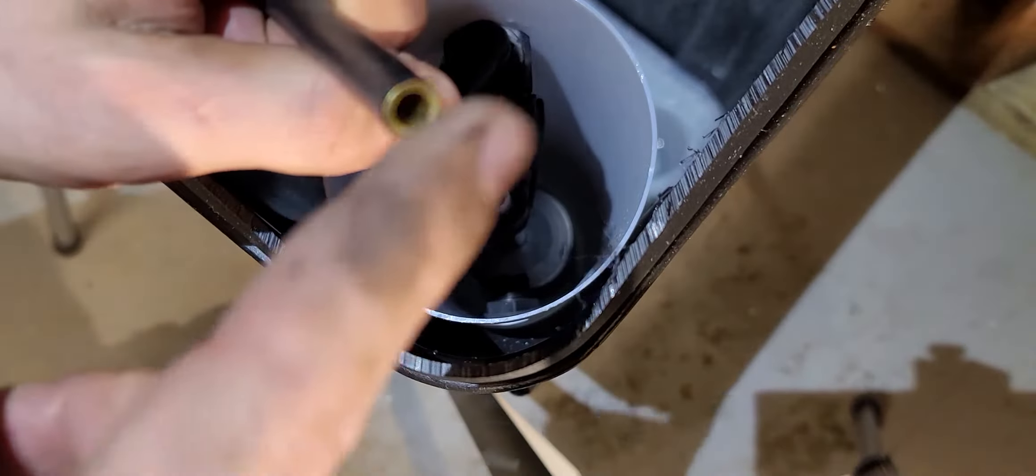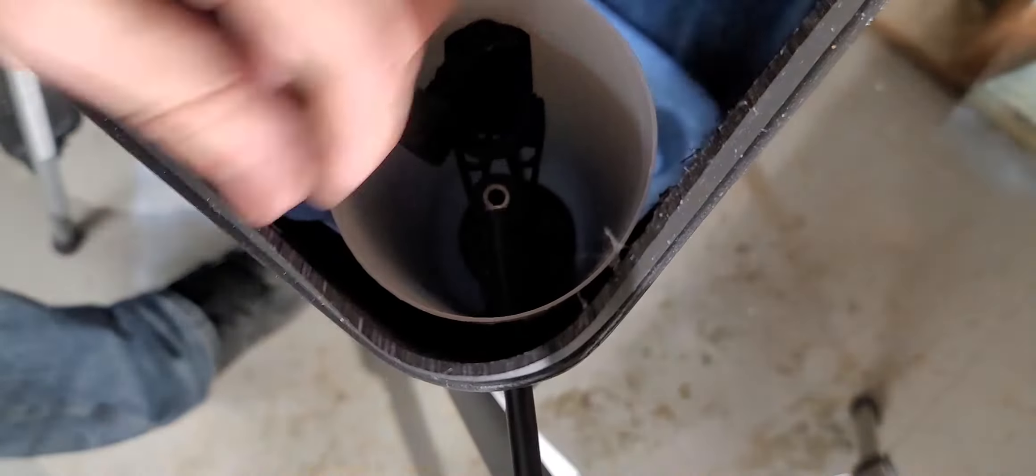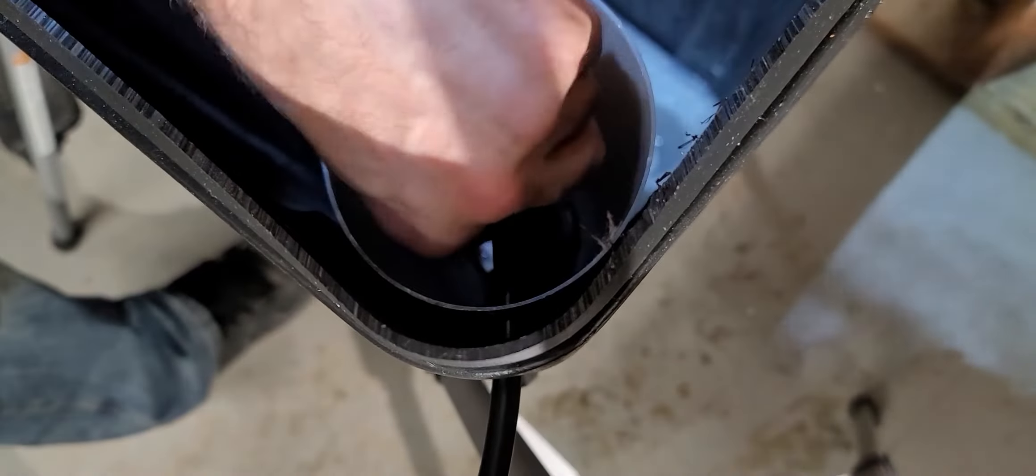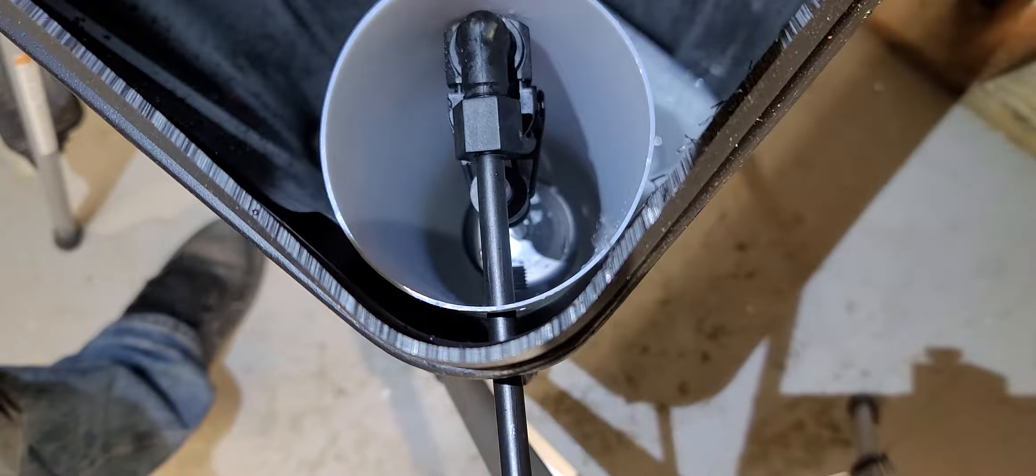Here I'm just installing this overflow spigot, or whatever you want to call it. That's where excess water will come out in case something goes wrong with this float. And I'm also installing the brine line.